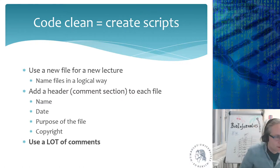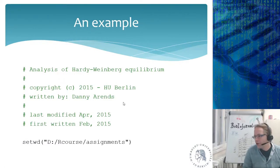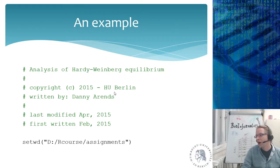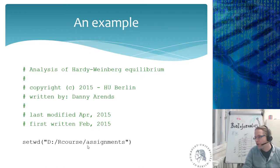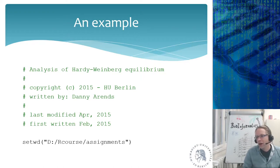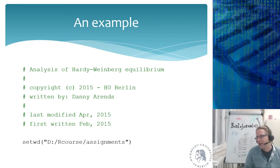As an example, a script I wrote for Hardy-Weinberg equilibrium analysis has a header stating: copyright 2015 HAW Berlin, written by me, last modified April 2015, first written February 2015. All my scripts start with a set working directory so I know exactly where the files are on my hard drive. Git also works with Mercurial and other version control systems.